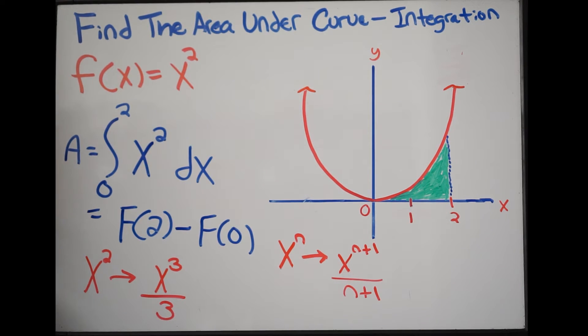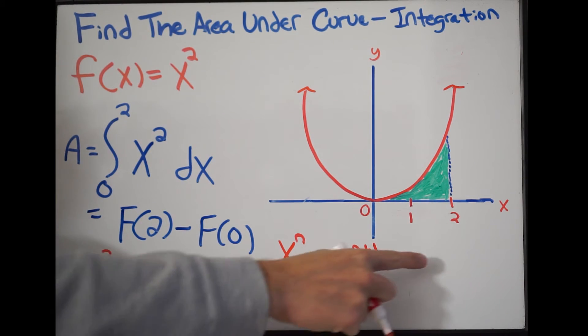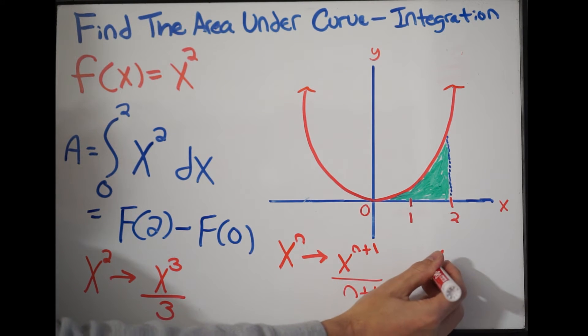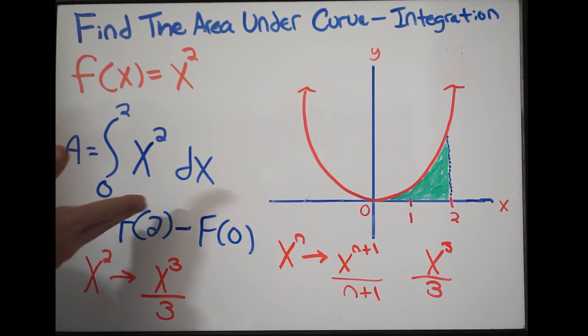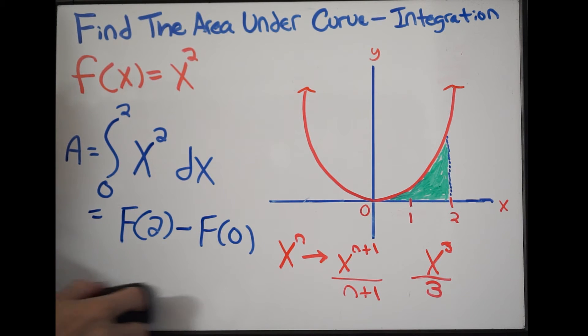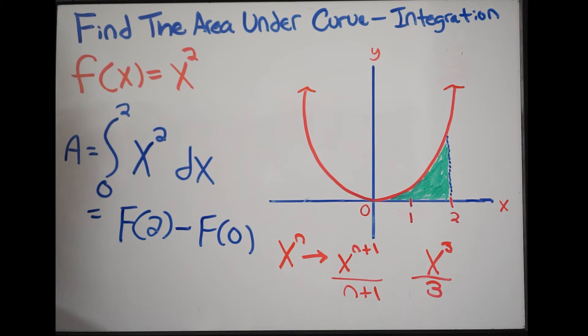So now we can go ahead and plug this in. I'm just going to write it right over here. So I have x³/3, here's our antiderivative. Let's go ahead and plug it in now. So let's erase this. What I'm going to have is the following: using our antiderivative, we have 2³/3 minus 0³/3.